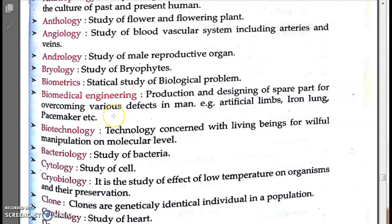Biometrics is the statistical study of biological problems. Examples include fingerprint mapping, facial recognition, and retina scans — all of these come under the category of biometrics. 'Bio' refers to biological problems and 'metrics' refers to statistical study.